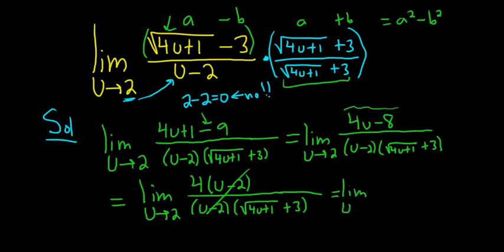So now we have the limit as u approaches 2 of 4 over square root 4u plus 1, and then plus 3. And now we can finally take the 2 and plug it in.